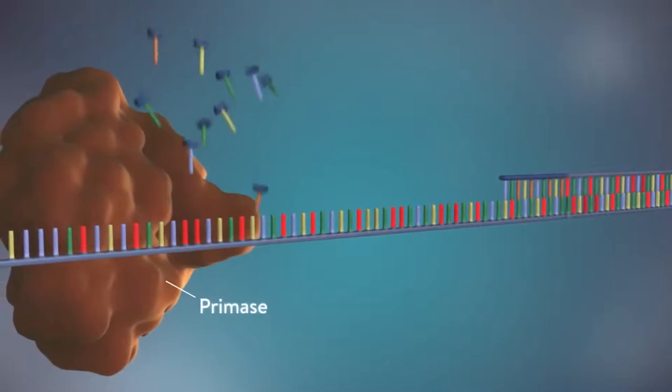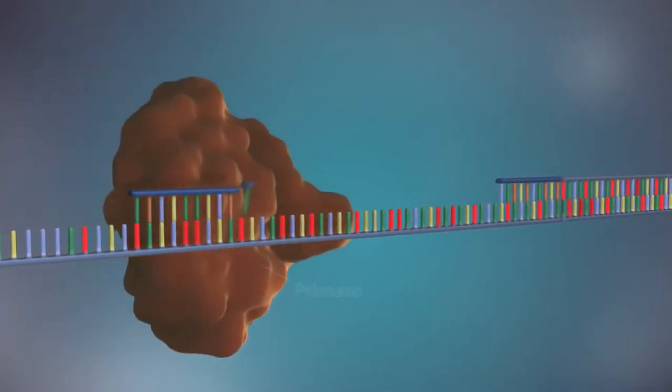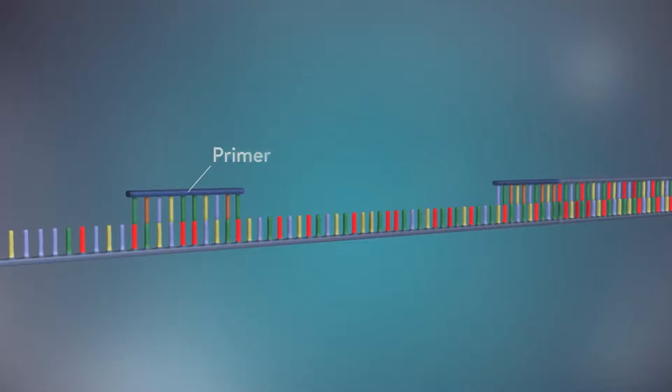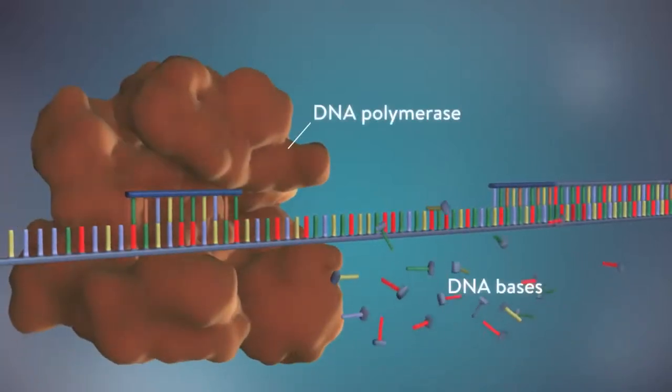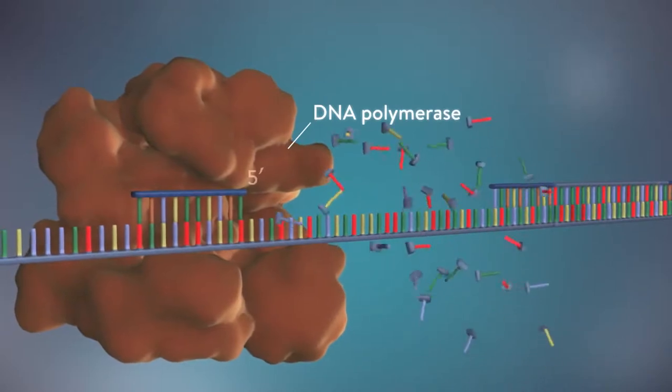Each fragment is started with an RNA primer. DNA polymerase then adds a short row of DNA bases in the 5' to 3' direction.